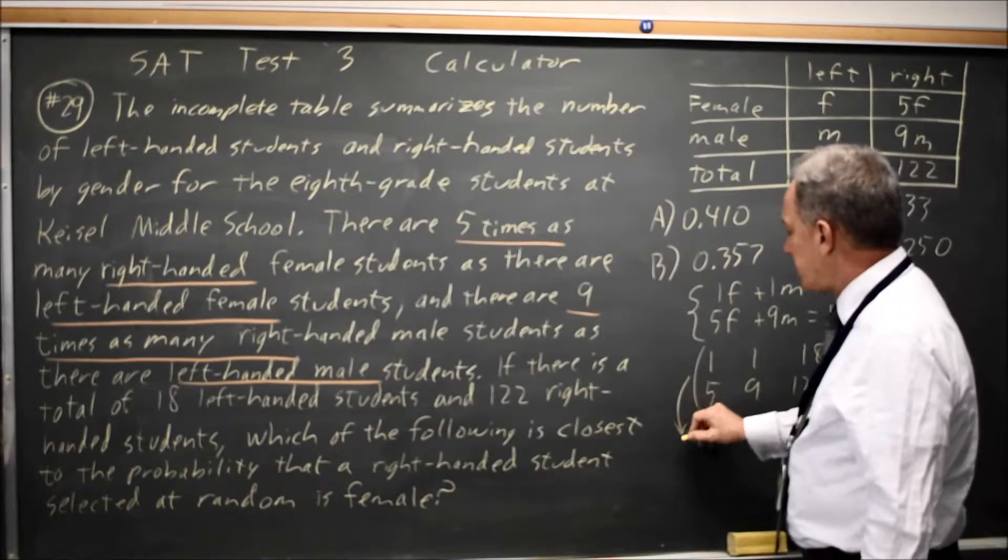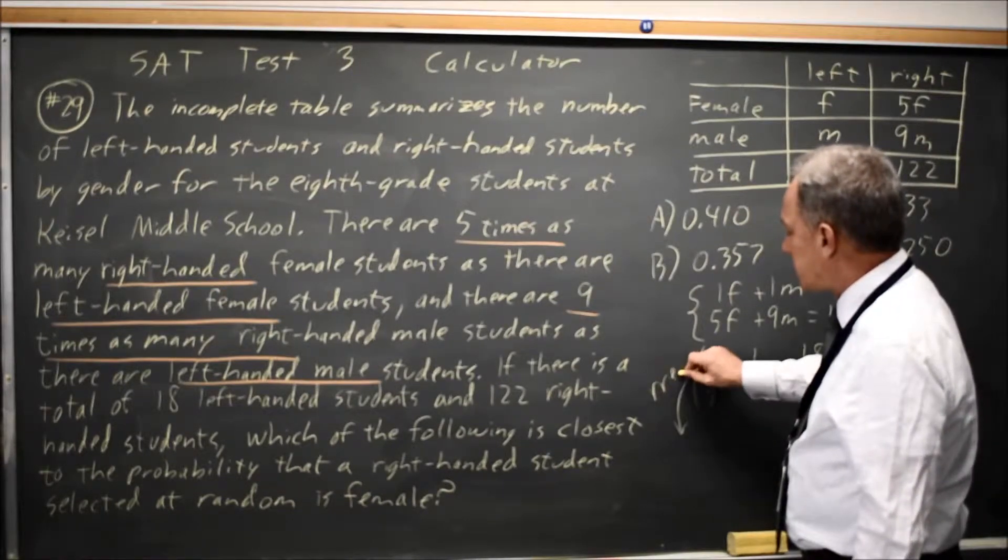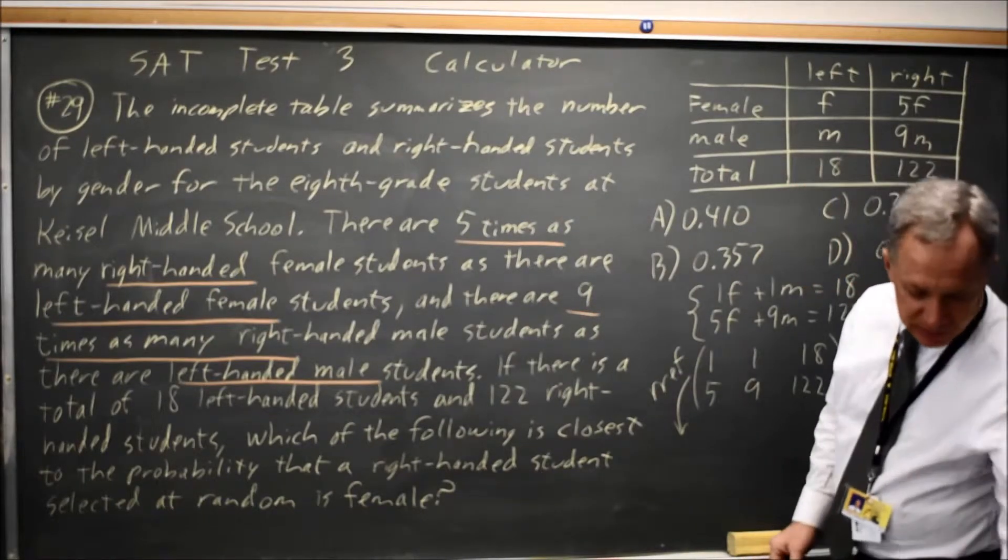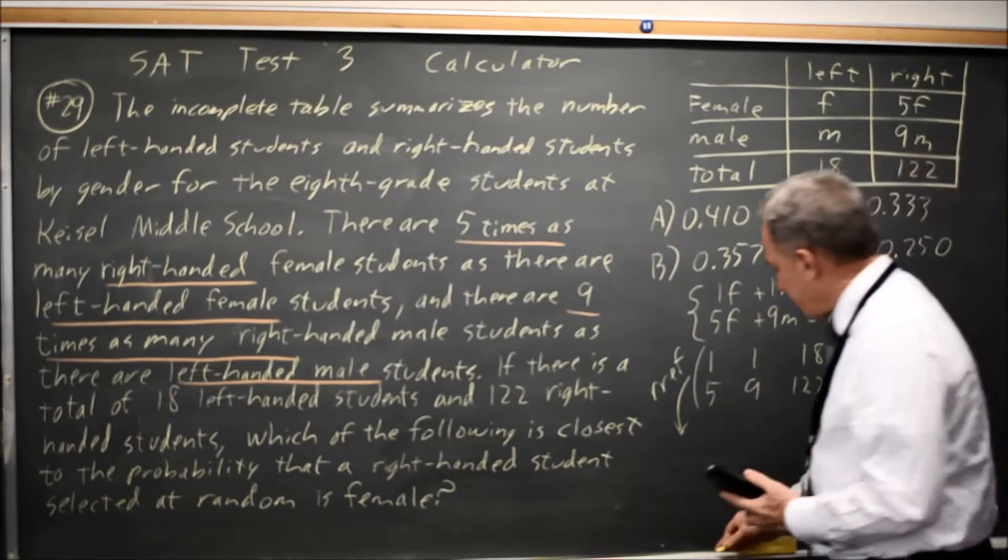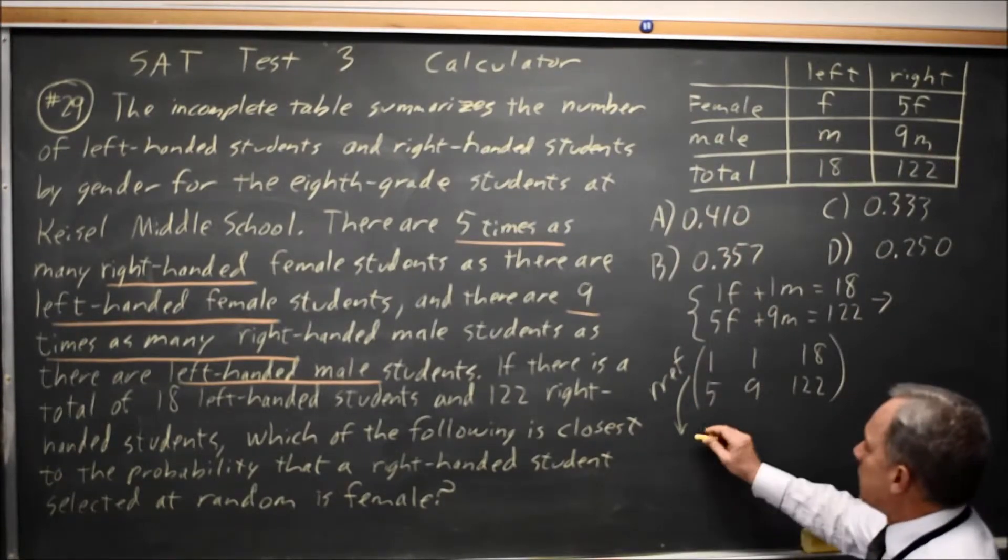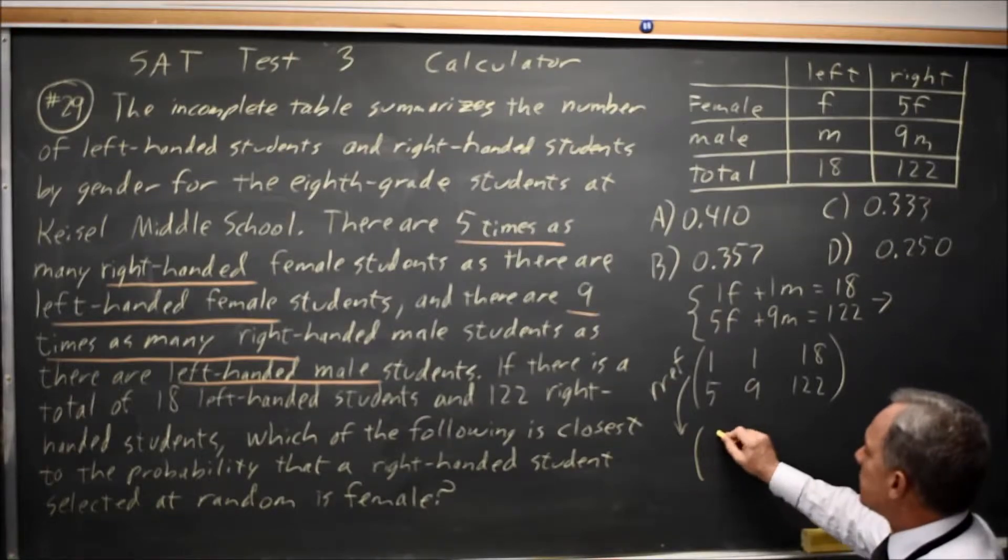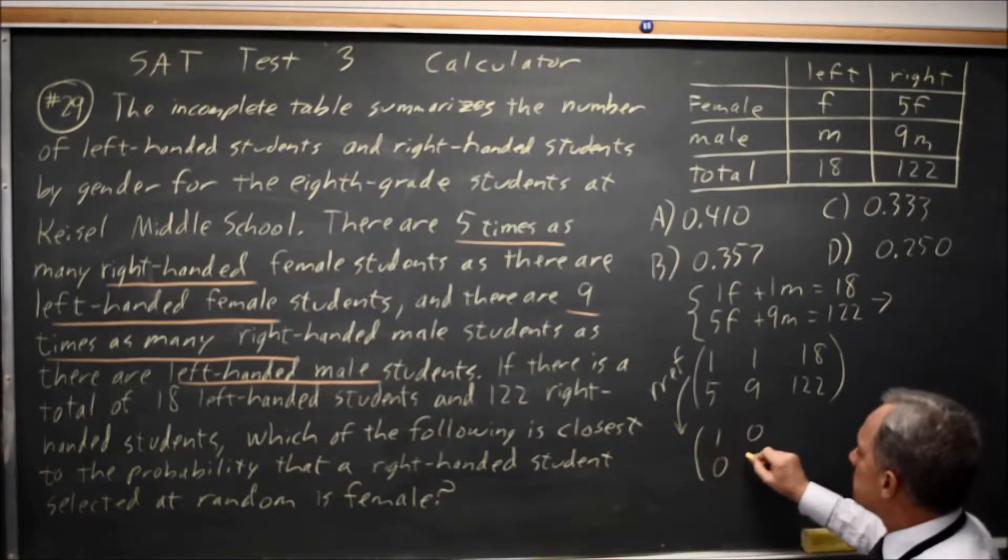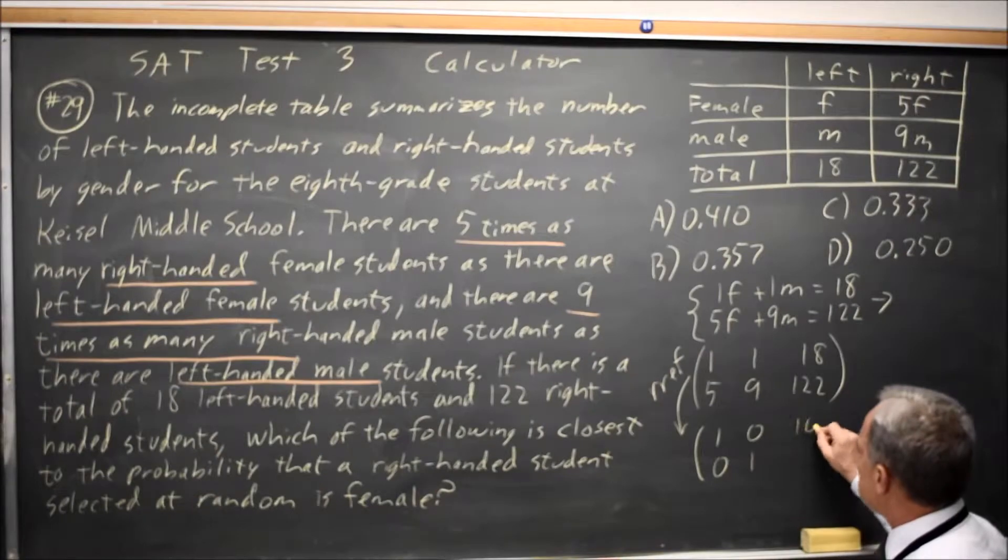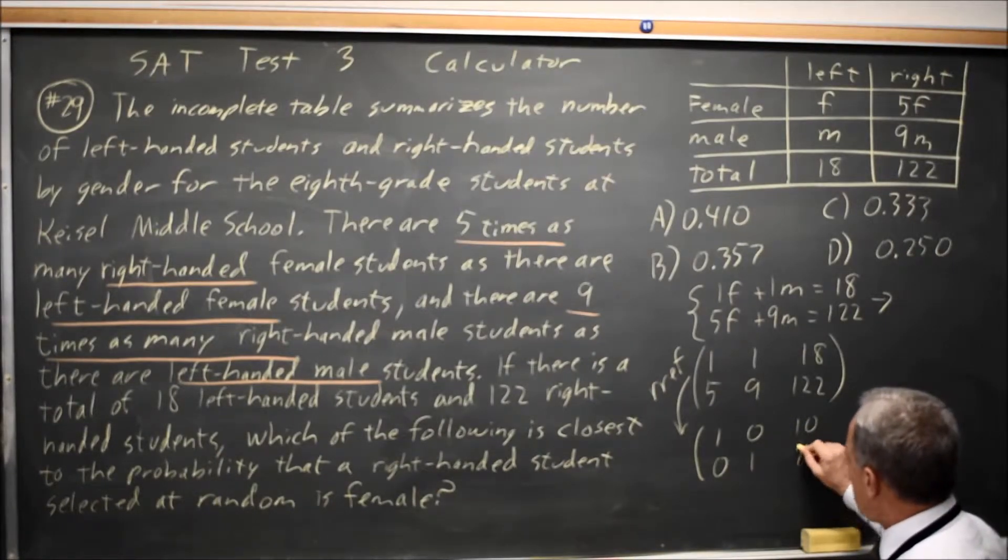If I ask my calculator for the reduced row echelon form on this matrix, assuming there's a unique solution, I'll get something that starts with 1, 0, 0, 1, and then in this case, 10, 8.